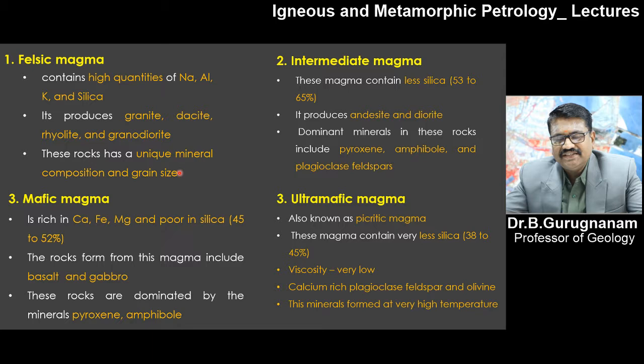Felsic magma has a unique mineral composition and grain size because it gets settled down at a very low temperature, so it gets a lot of time to crystallize. Therefore, uniform size of grains are noticed in felsic magma.